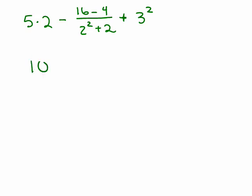So, 5 times 2, and this 3 squared we could do. All right, now let's simplify these. In the numerator, 16 minus 4, that's 12. Now, in the denominator, I need to use the order of operations. So, I've got exponents, so I've got 2 squared, that's 4 plus 2.